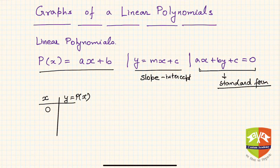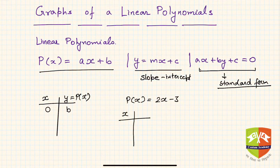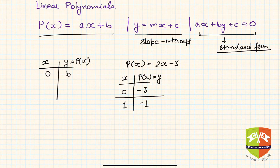Let us take an example. Let our polynomial be p(x) = 2x − 3. Let us plot some points. When x = 0, p(x) = −3. When x = 1, p(x) = −1. And when x = 2, p(x) = 4 − 3 = 1.